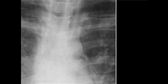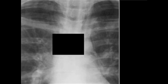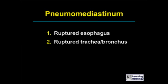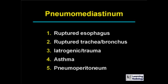The next differential is pneumomediastinum. There are five causes. Causes include ruptured esophagus, ruptured trachea or bronchus, iatrogenic or traumatic, asthma, or sometimes pneumoperitoneum.